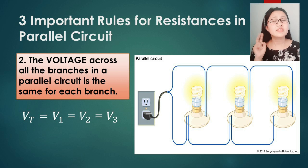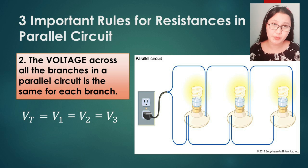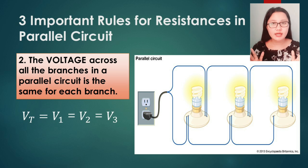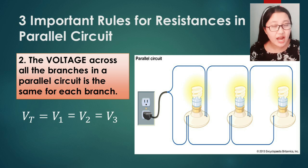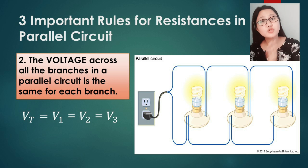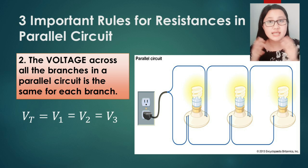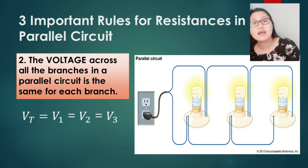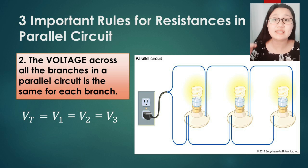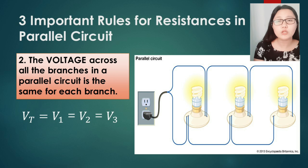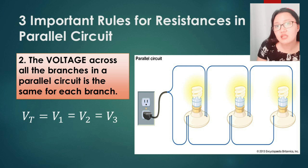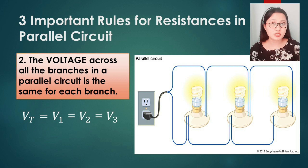For the second rule: the voltage across all branches in a parallel circuit is the same for each branch. Unlike in a series circuit where current is equal, in a parallel circuit it is the voltage that is equal across all branches. The formula is VT = V1 = V2 = V3. With more branches, we can accommodate more loads at the same voltage level.